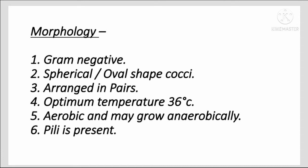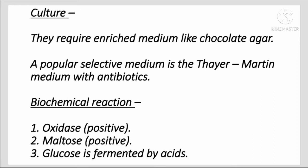Neisseria gonorrhoeae, or gonococcus. Morphology: gram negative, spherical or oval shaped cocci, arranged in pairs. Optimum temperature is 36 degrees Celsius. Aerobic but may also grow anaerobically. Pili are present. Culture: requires enriched medium like chocolate agar. A popular selective medium is the Thayer-Martin medium with antibiotics.